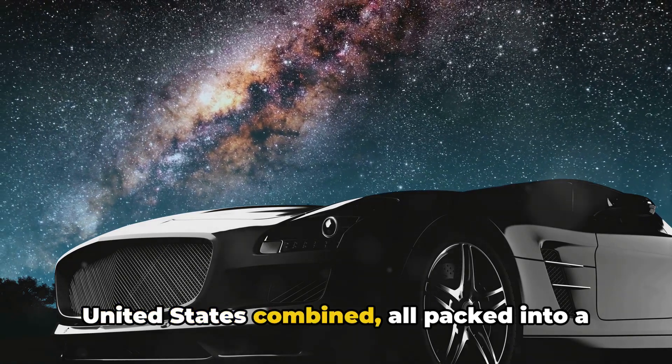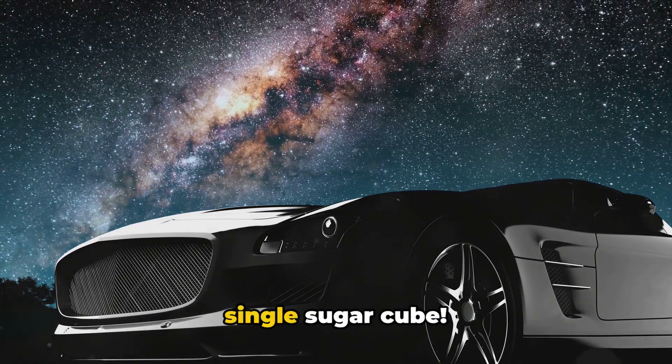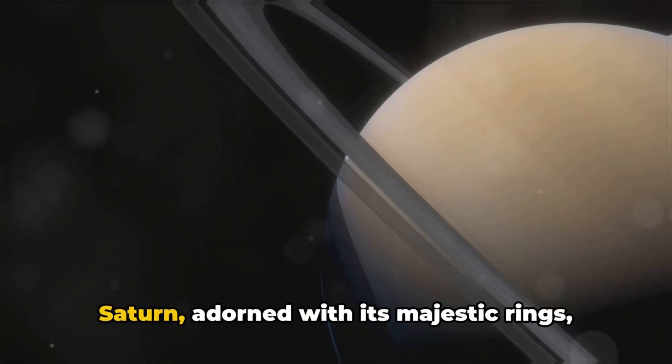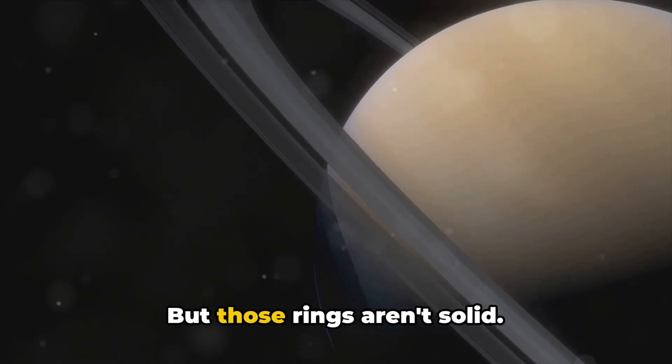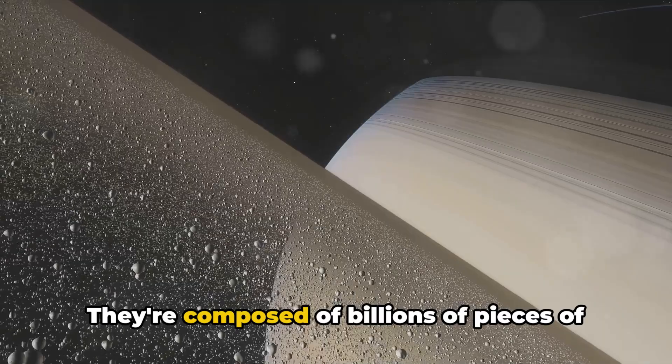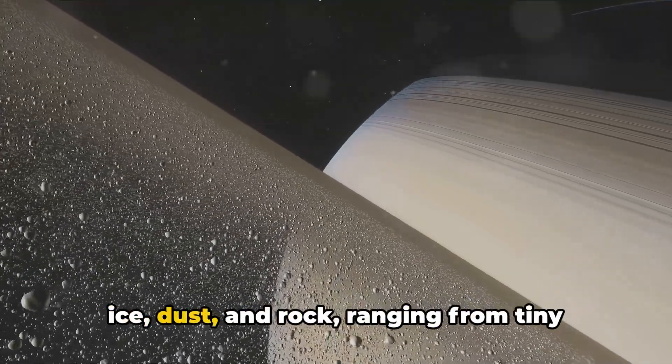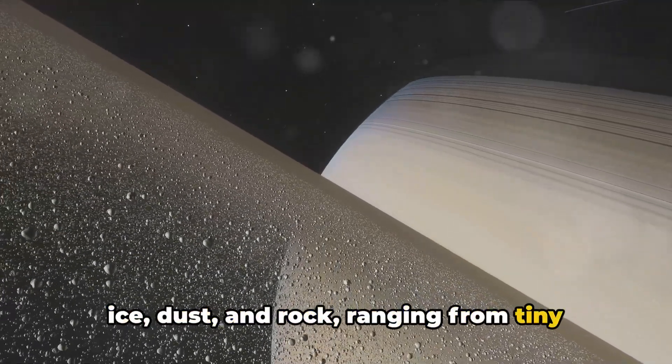Saturn, adorned with its majestic rings, presents a spectacle of cosmic beauty. But those rings aren't solid. They're composed of billions of pieces of ice, dust, and rock, ranging from tiny grains to giant boulders.